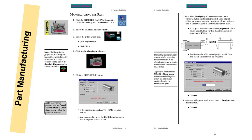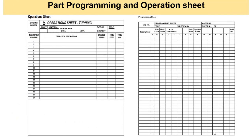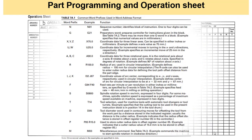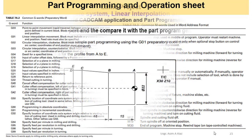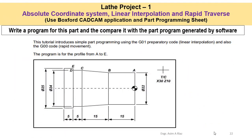These are the same part programming sheets — the same CAD/CAM machine is used. You are already familiar with these sheets from the previous lab practical, where we used the same practice with G&M codes. This was the previous CAD model drawn in the BoxFor CAD simulator using the absolute coordinate system.